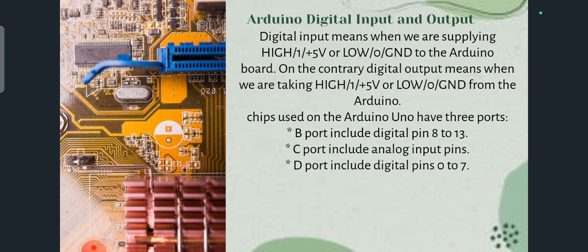That is, how much input we are giving and what is the output we are getting from the Arduino. There are majorly three Arduino chips: B-Port, C-Port, and D-Port. B-Port includes pins 8 to 13, C-Port includes analog input pins, and D-Port includes digital pins 0 to 7.